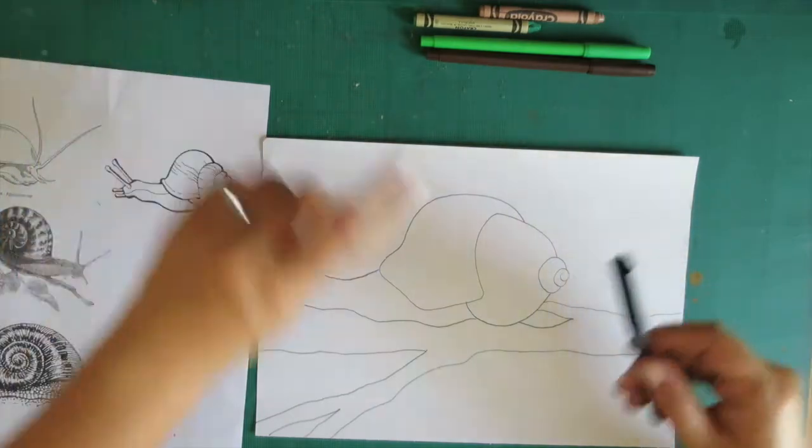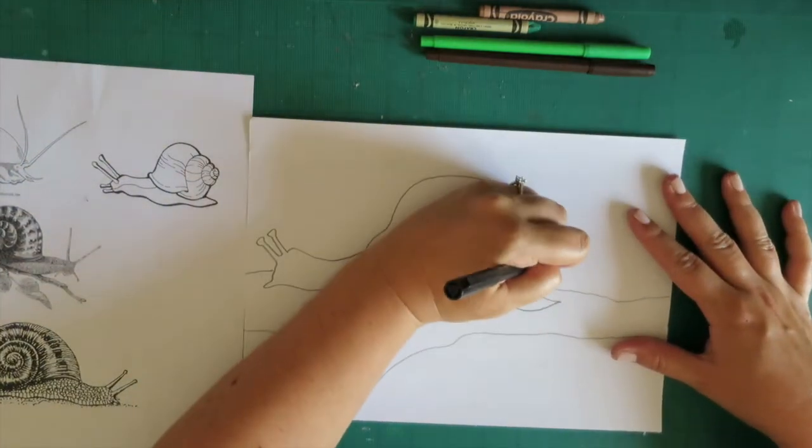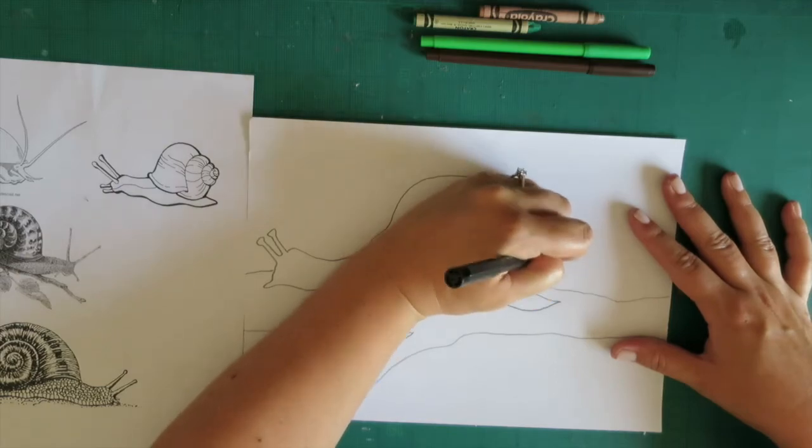The next thing you're going to do is take your black marker and outline everywhere you have pencil marks.